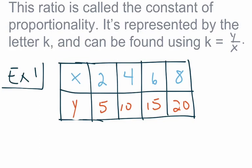To determine if this table has a constant of proportionality, we set up a fraction with the Y value over the X value. For the first column, K = 5 over 2. For the second column, K = 10 over 4. We can divide both by 2 to simplify, giving us K = 5 halves again.